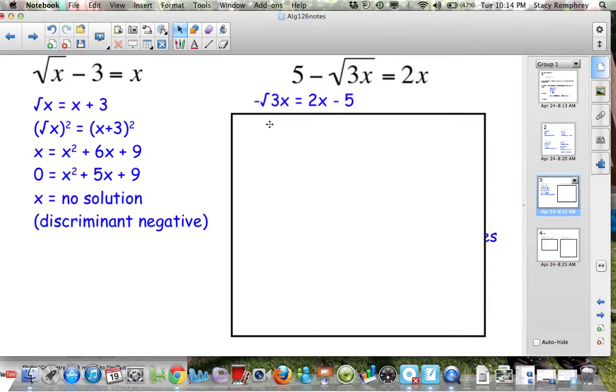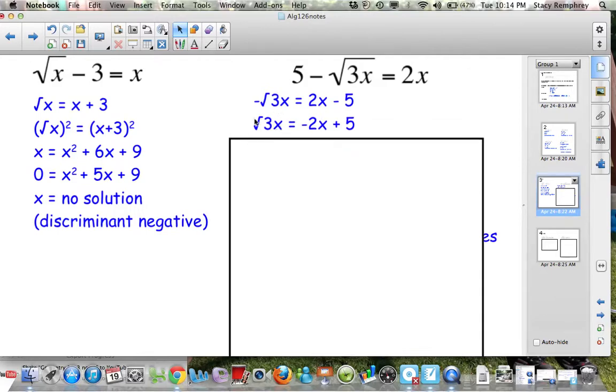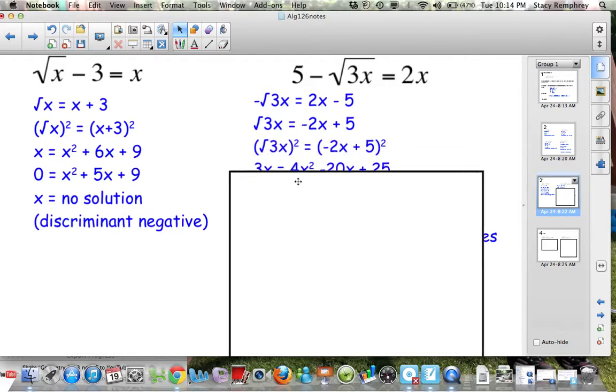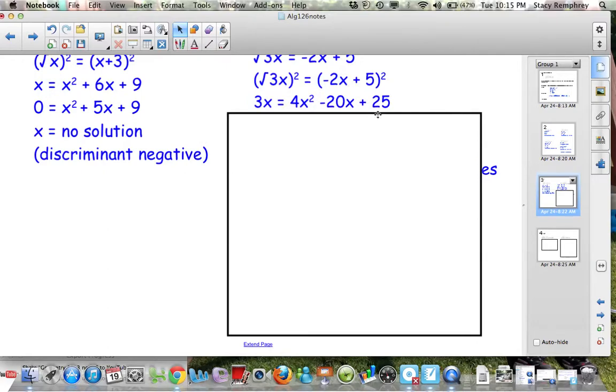In this problem, again, I'm going to subtract 5 from both sides. I've got to get that square root alone first. Then I'm going to divide everything by negative 1, or you can multiply by negative 1, to make sure that square root is by itself. Once it's by itself, I'm going to square both sides. And again, this is not 4x squared plus 25. Do your area model with negative 2x plus 5, negative 2x plus 5 if you're not sure. When you multiply that out, you get to here. I see a quadratic.